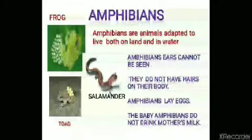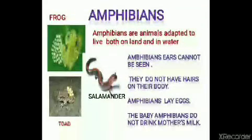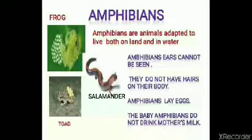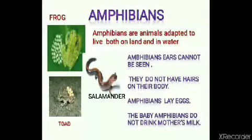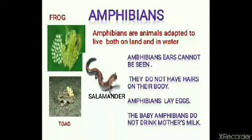Look here the picture of a frog, toad and salamander. These animals belong to a special group of animals known as amphibians. Amphibians are the animals adapted to live both on land and in water. Amphibian ears cannot be seen. They do not have hairs on their body. Amphibians lay eggs. The baby amphibians do not drink mother's milk.